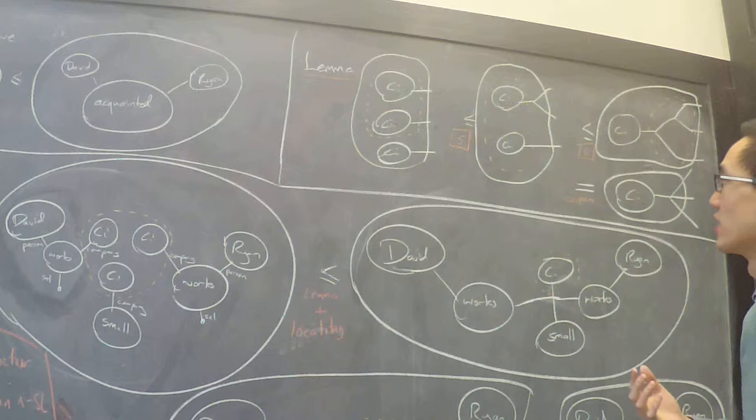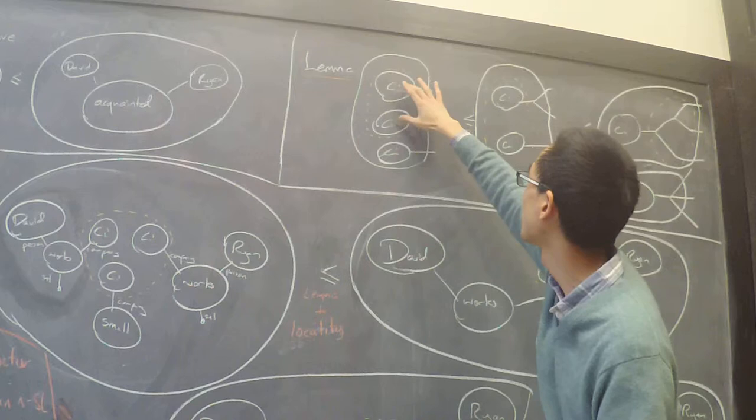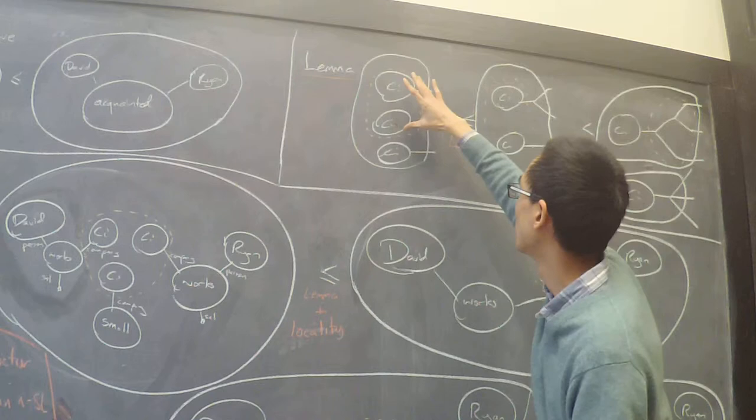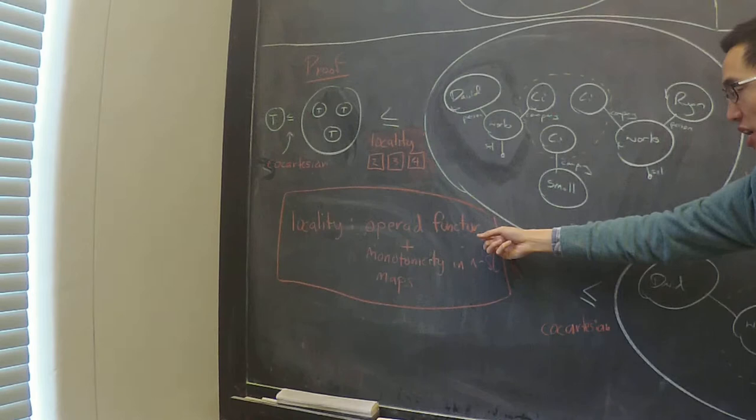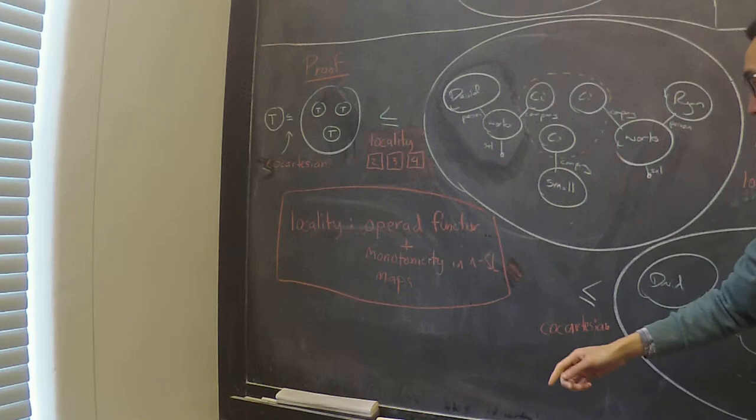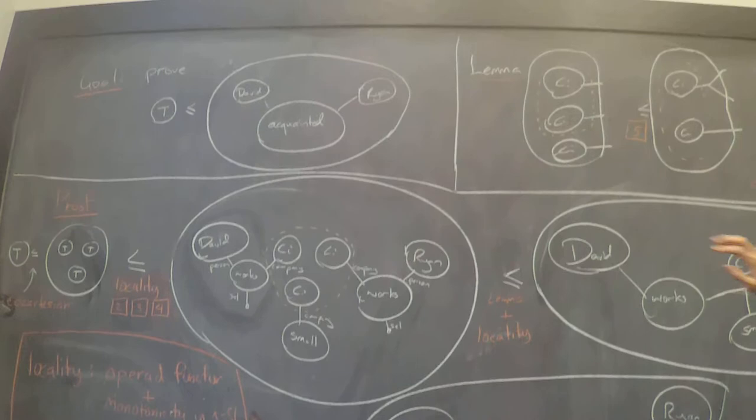And then we have this op-rad, this co-cartesian op-rad functor from co-span to the co-cartesian op-rad of meet semi-lattices. And so there's this fact that we can reason locally in these diagrams where we can take some part and we know that this axiom implies this diagram is less than this diagram. So when we place that into a larger context we can still apply that. We're calling that locality and what that follows from is the fact that we have an op-rad functor from co-span to meet semi-lattices and that the maps in these semi-lattices are monotone maps so they're left in that order.